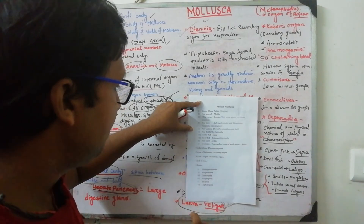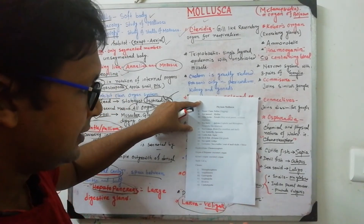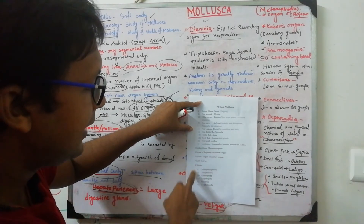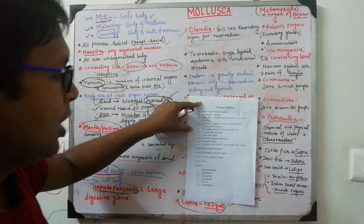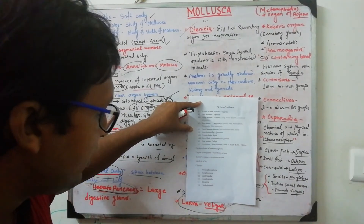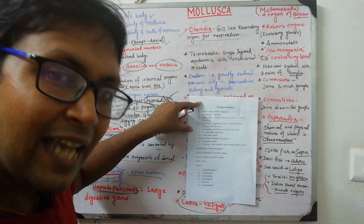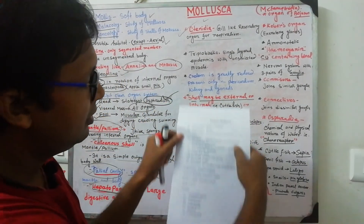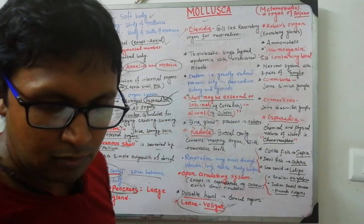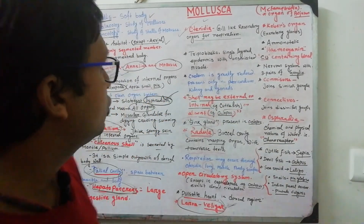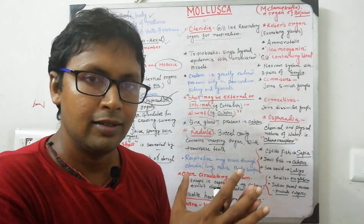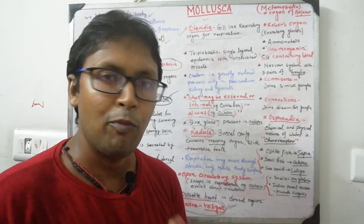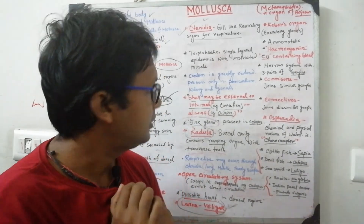To recap: Osphradium is a chemoreceptor; the organ of Bojanus is an excretory organ; the shell is formed from calcium carbonate released by the mantle. Phylum Mollusca has six classes: Monoplacophora, Amphineura, Gastropoda, Scaphopoda, Bivalvia, and Cephalopoda. These are the important facts about this phylum — take proper notes to answer all exam questions.